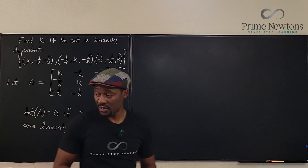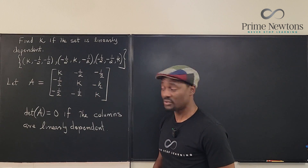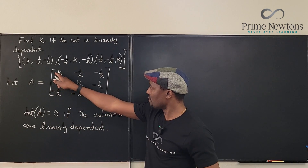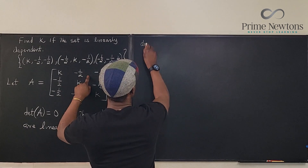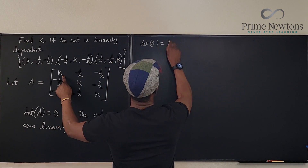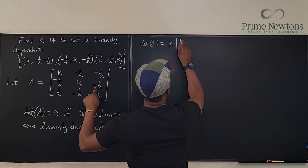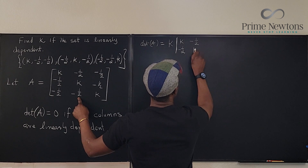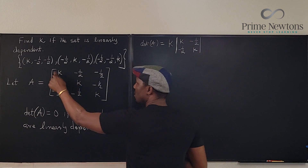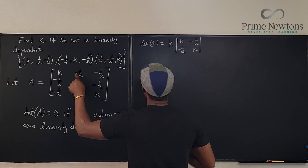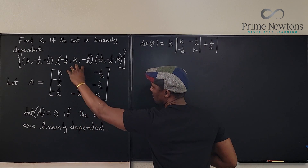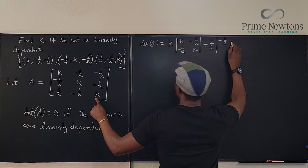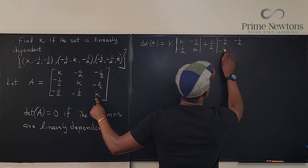We know the determinant of A is going to be zero if the columns are linearly dependent, and we can start doing our calculation. For this determinant, I'll use cofactor expansion along the top row. So the determinant of A equals k times the 2×2 minor [k, −1/2; −1/2, k], then minus (−1/2) times the minor [−1/2, −1/2; −1/2, k], then plus (−1/2) times the minor [−1/2, k; −1/2, −1/2]. The sign pattern along the top row is plus, minus, plus.